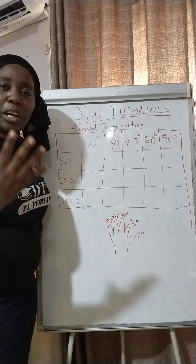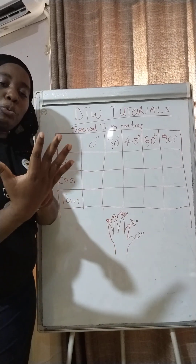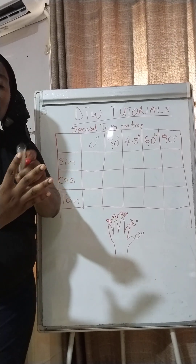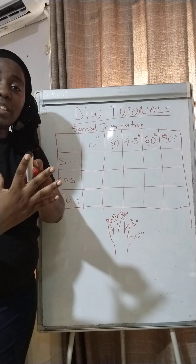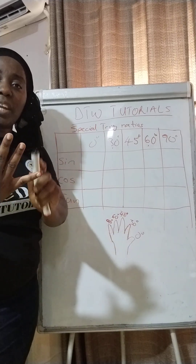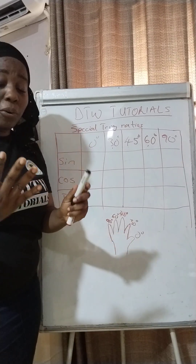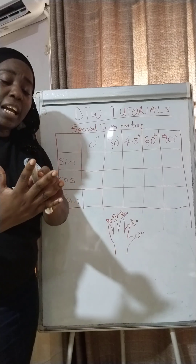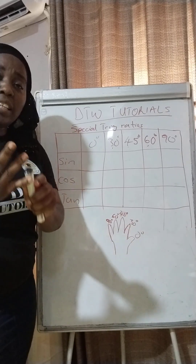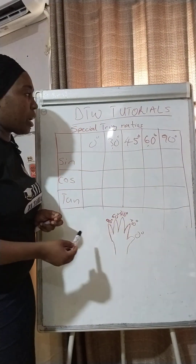Everyone, look at your right hand right now. On your right hand, your thumb is zero degrees, the next finger is 30 degrees, this one is 45 degrees, this is 60 degrees, and your little finger is 90 degrees. That's how you're going to label them in your mind — zero, 30, 45, 60, and 90 — from the lowest to the highest.